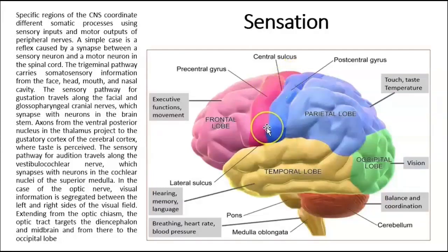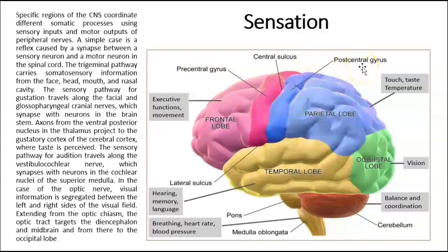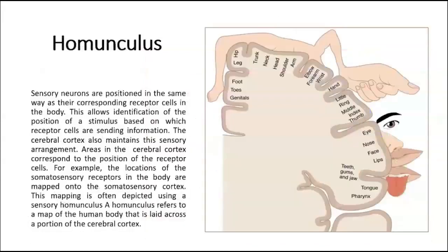The central sulcus is the longest sulcus we have. The precentral gyrus in front of it is the primary motor cortex, and the postcentral gyrus behind it is the primary somatosensory cortex. A homunculus is a graphical representation of the number of receptors in our skin. For example, you have more receptors in your hands, so a larger area of the brain is dedicated to processing information from your hands compared to your forearm.